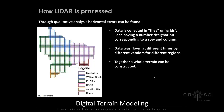Data is flown in grids, and through qualitative analysis horizontal errors can be found by looking closely at the data along edges or where there are water bodies. Data can be flown at different times by different vendors for different regions, and together a whole terrain can be constructed. Here's an example showing Manhattan, Wildcat Creek, Fort Riley, K-DOT, Junction City, and Konza.